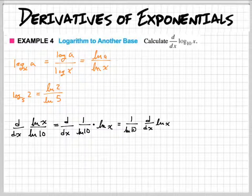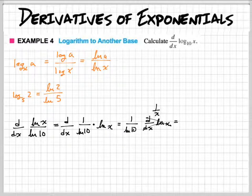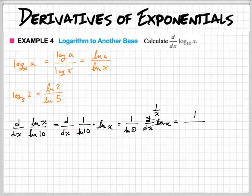1 over X. Okay, so this is, this right here is going to be 1 over X. So, what is this times 1 over X? Well, we have 1 on top, and we have X times the natural log of 10.